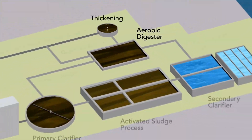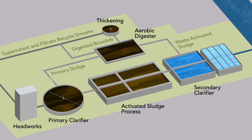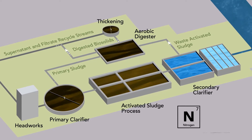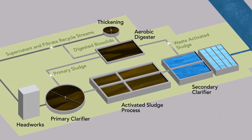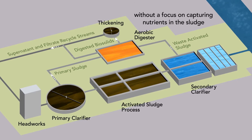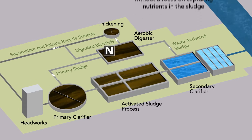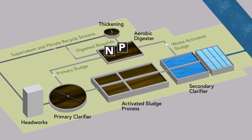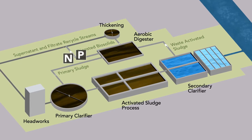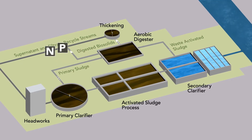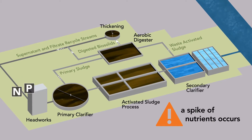Aerobic digesters are designed to break down waste sludge. During this process, nitrogen and phosphorus are solubilized. When a digester is operated without a focus on capturing nutrients in the sludge, nitrogen and phosphorus remain dissolved in the liquid. When the liquid is recycled during decanting, thickening and dewatering, a spike of nutrients occurs.